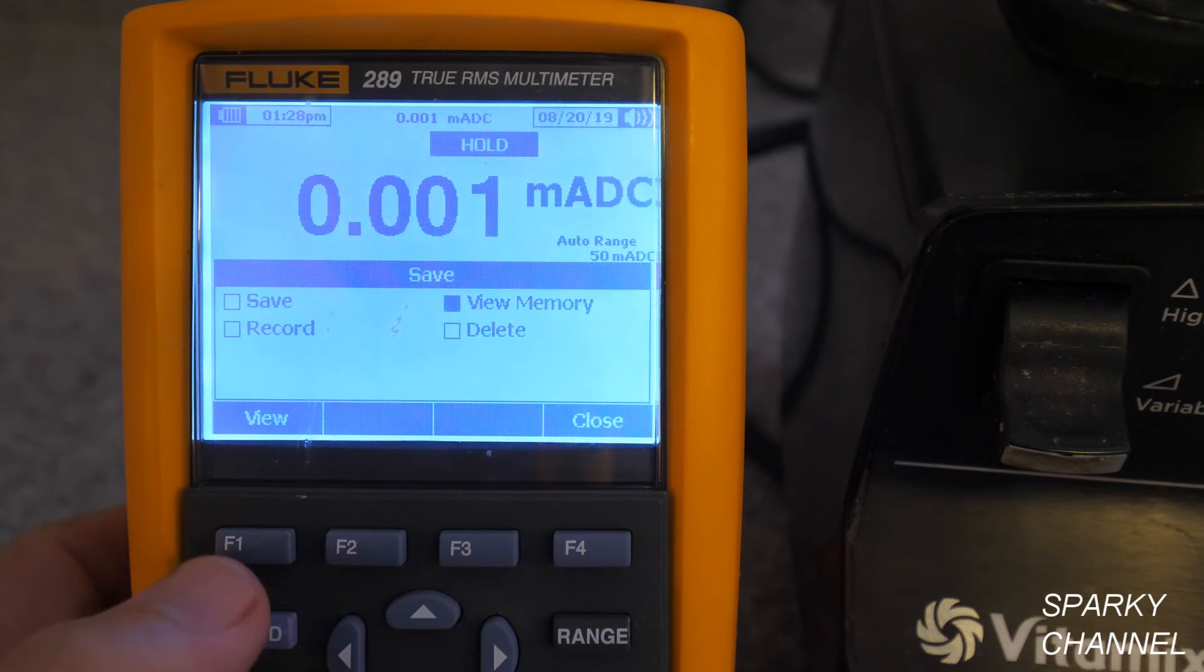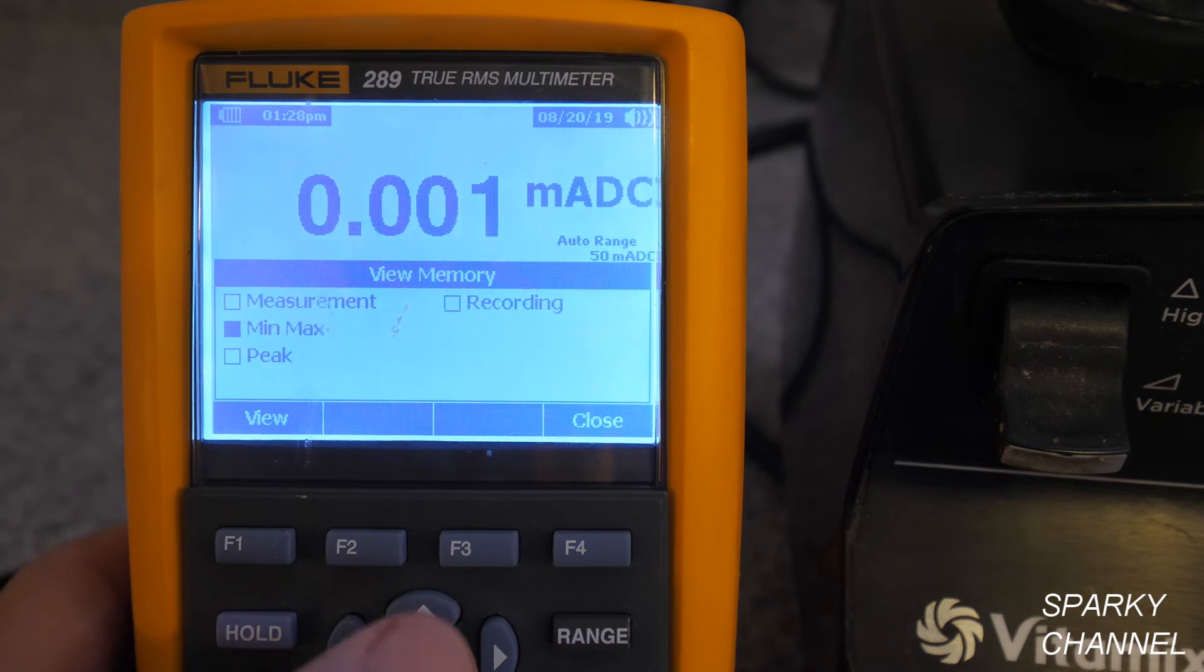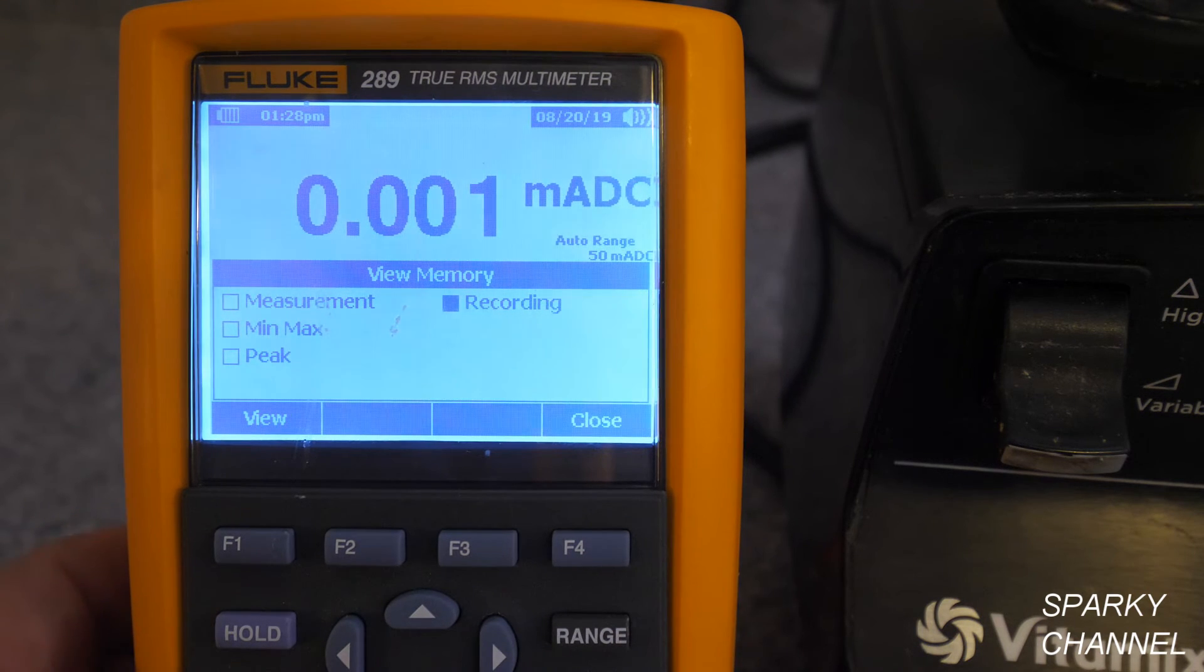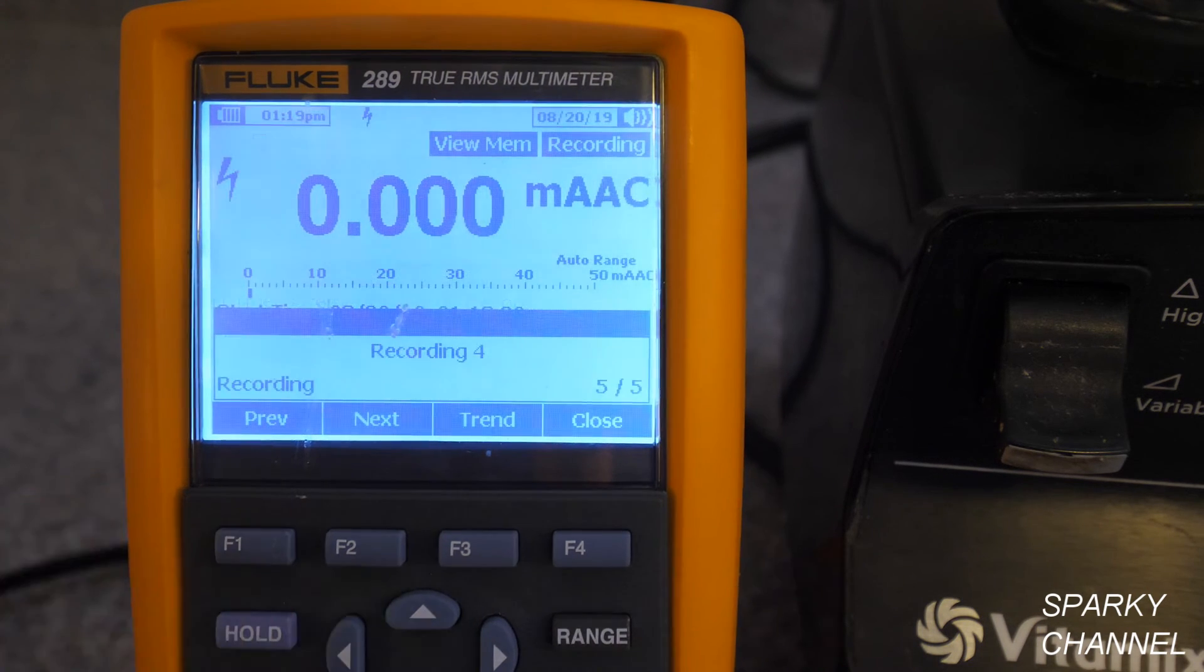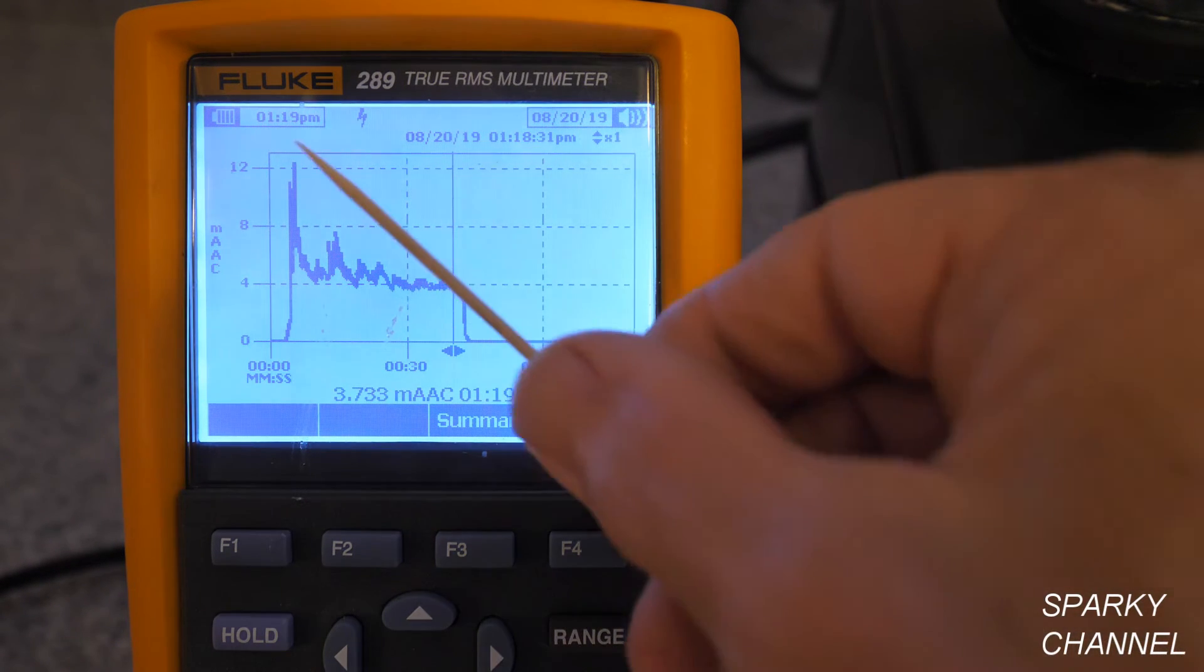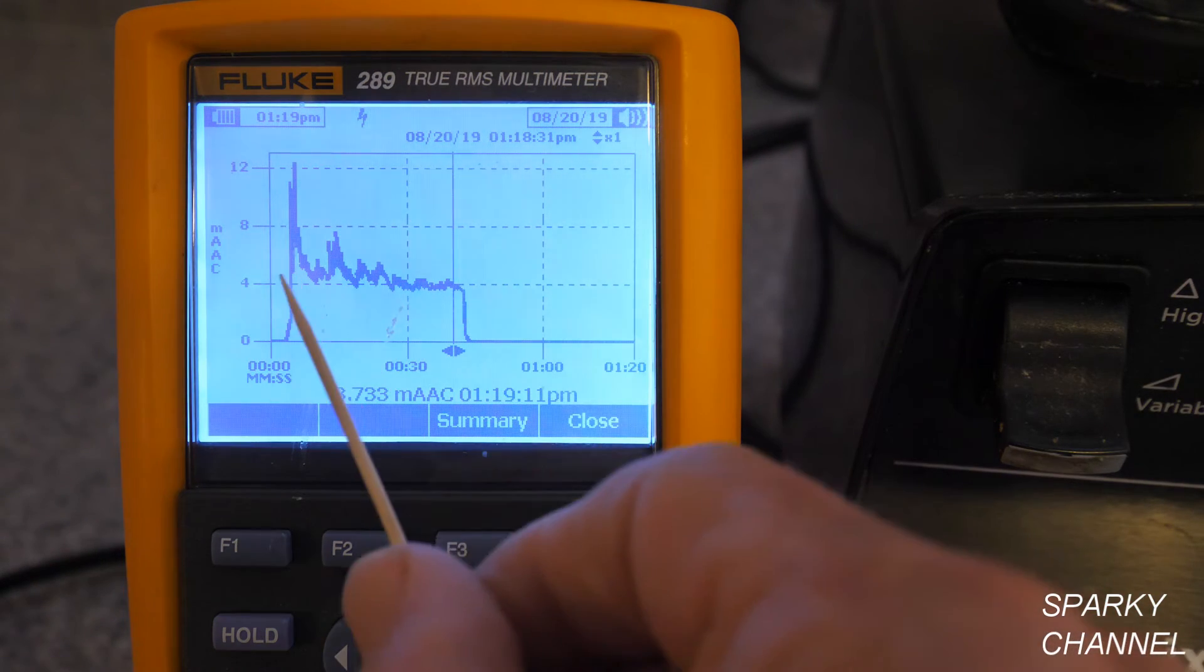I'm going to save. View memory. And I go up to measurement. And over to recording. And say view. And say trend. And there's our graph again. So this actually got up over 13 amps. Pretty amazing. And the average was 4.5. That looks about right.